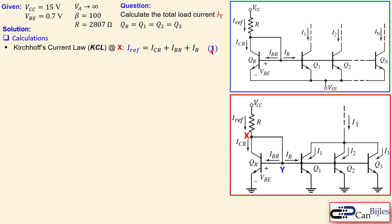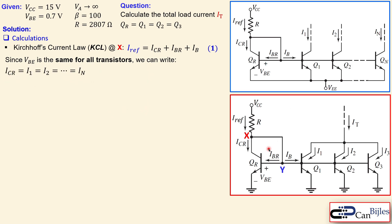Since the VBE is the same for all transistors — which is really important — we can write that the collector currents for all transistors are exactly the same. So ICR equals I1 equals I2 equals I3, and in general form this extends to all N transistors. That is equation number two.